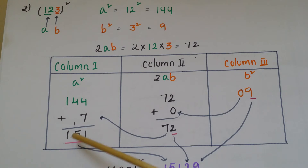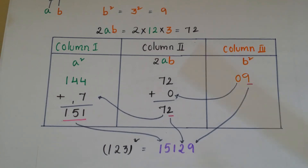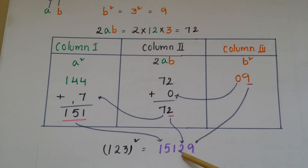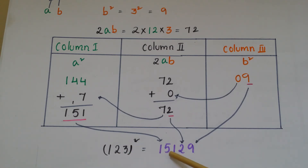Underline the whole value 151. Now write these underlined values together: 151 from Column 1, units digit 2 from Column 2, and units digit 9 from Column 3. So 123² is equal to 15129.